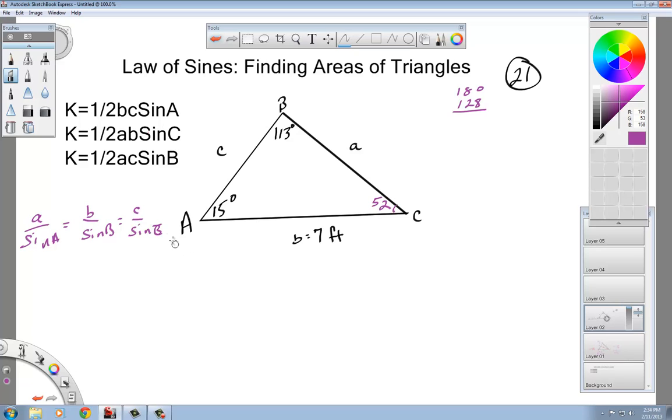Let's just erase that. Okay, these are the capitals on the bottom. So if I'm going to find little c and I know the b's, I'm going to set this up using these two right here. And it's going to say seven over the sine of 113 equals little c over the sine of 52.